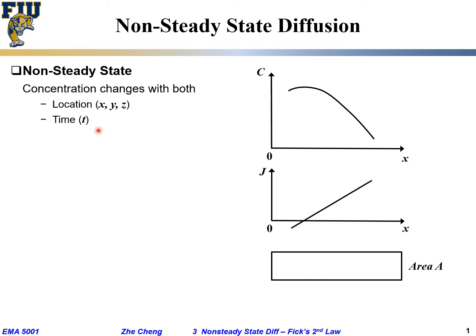Suppose we have a plot of C versus x — this is what we call a concentration profile, showing how concentration changes with location x. And then if we have J versus x, suppose this is our sample with a cross-section area A, the local flux may change from location to location. Here I'm plotting J versus x, meaning flux versus location, and the flux may change from location to location.